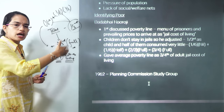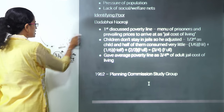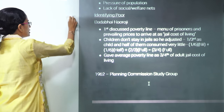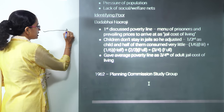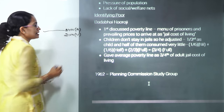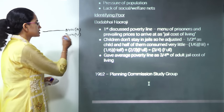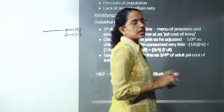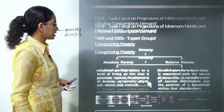Later, the idea of poverty line changed and various committees recommended different approaches. The most common method now is based on calorie values: 2400 calories for rural areas and 2100 for urban areas. This is the standard amount of consumption that determines the poverty line — if a person's calorie intake falls below this, they are considered below the poverty line.